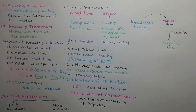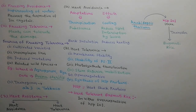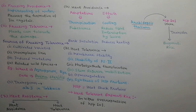Heat-tolerant Basmati rice has been developed by HSP101 gene transfer from Arabidopsis thaliana. Basmati rice is heat tolerant due to overexpression of the HSP101 gene.